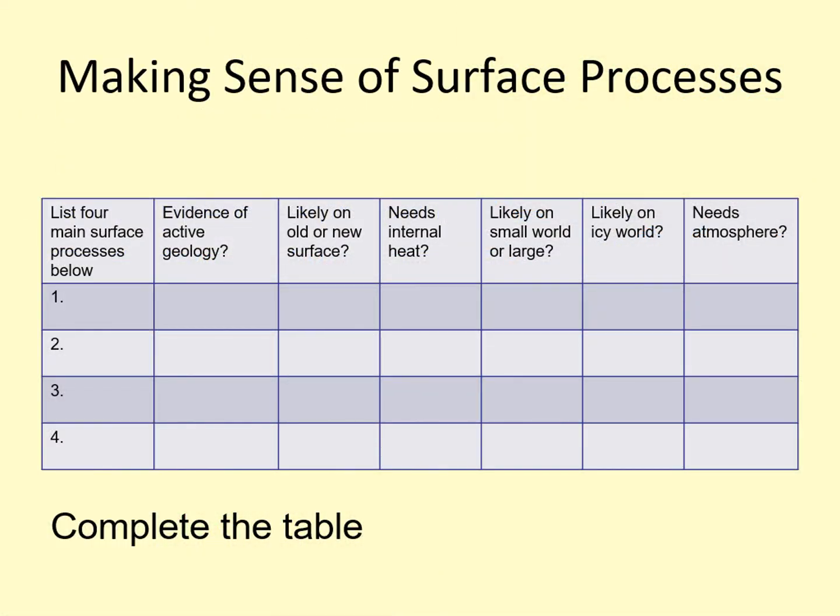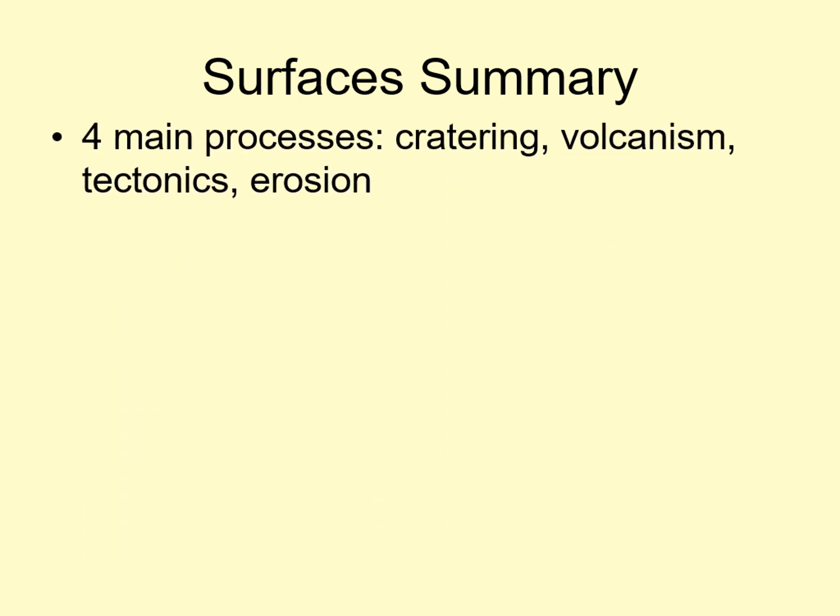Now that we've gone through the major surface processes, see if you can put together the key features of each of them in this table. Let's summarize the key ideas behind surface processes. There are four main surface processes: impact cratering, volcanism, tectonics, and erosion.